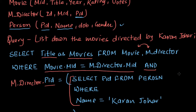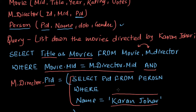Sub-queries reduce the complexity of queries and are also easier to understand. In the next lecture, we will look at string comparison queries — for example, if we do not know how to spell a name like Karan Johar, we need a mechanism to search over the string, such as checking if it starts with 'ka'. This kind of query involves string comparison.